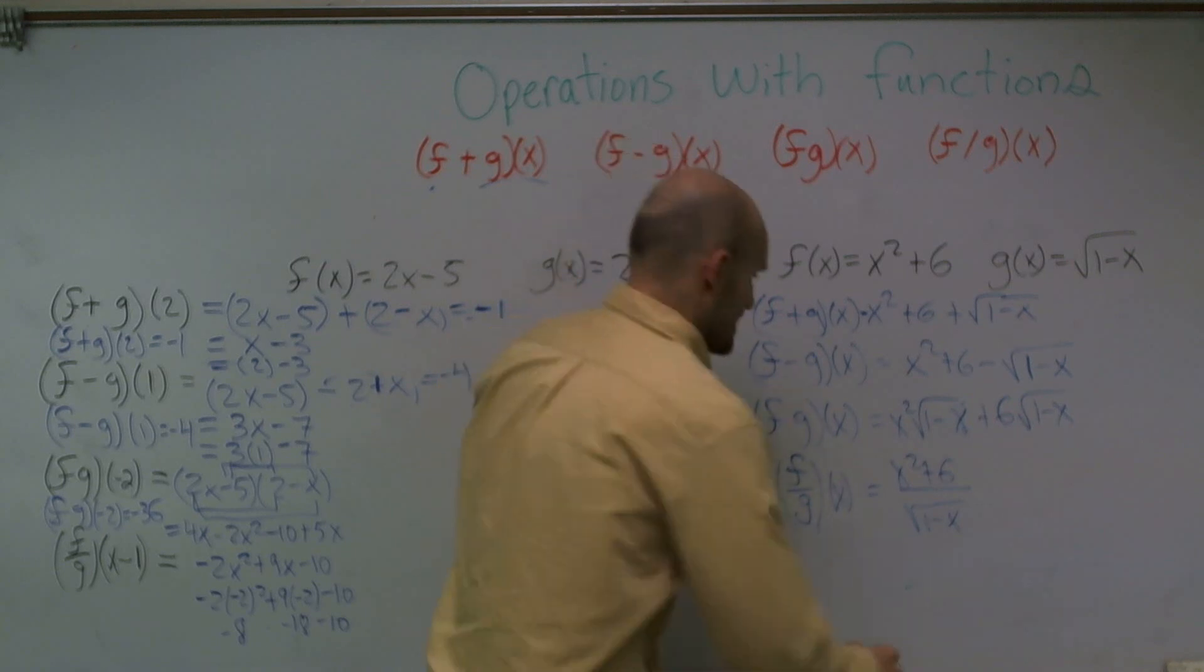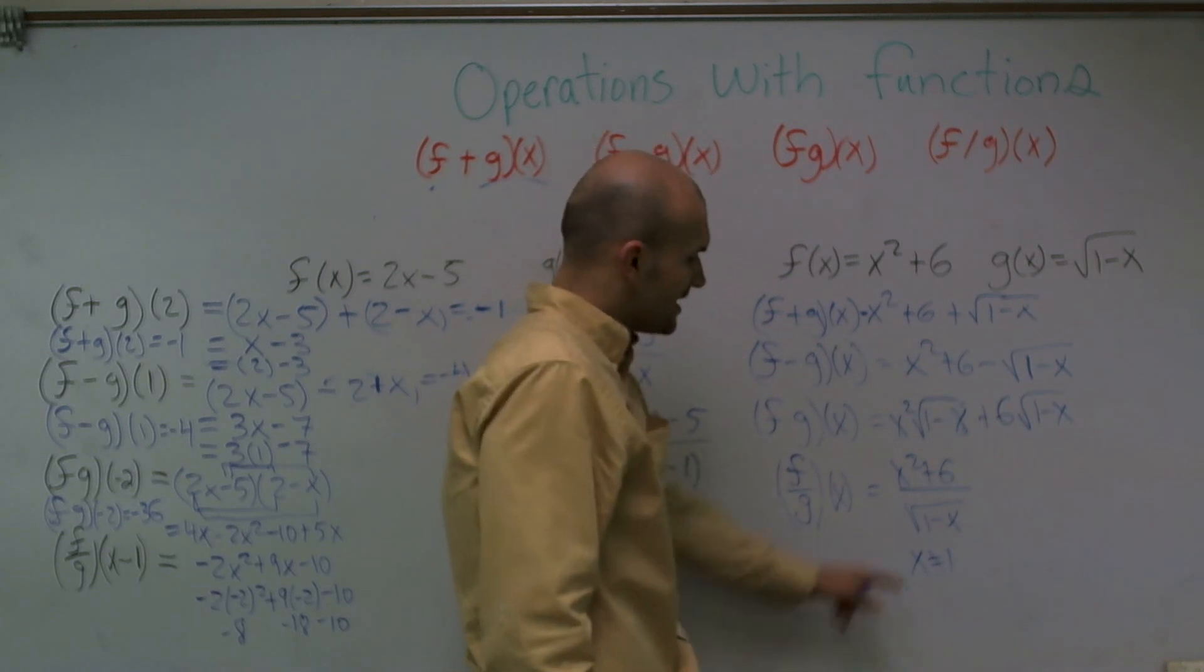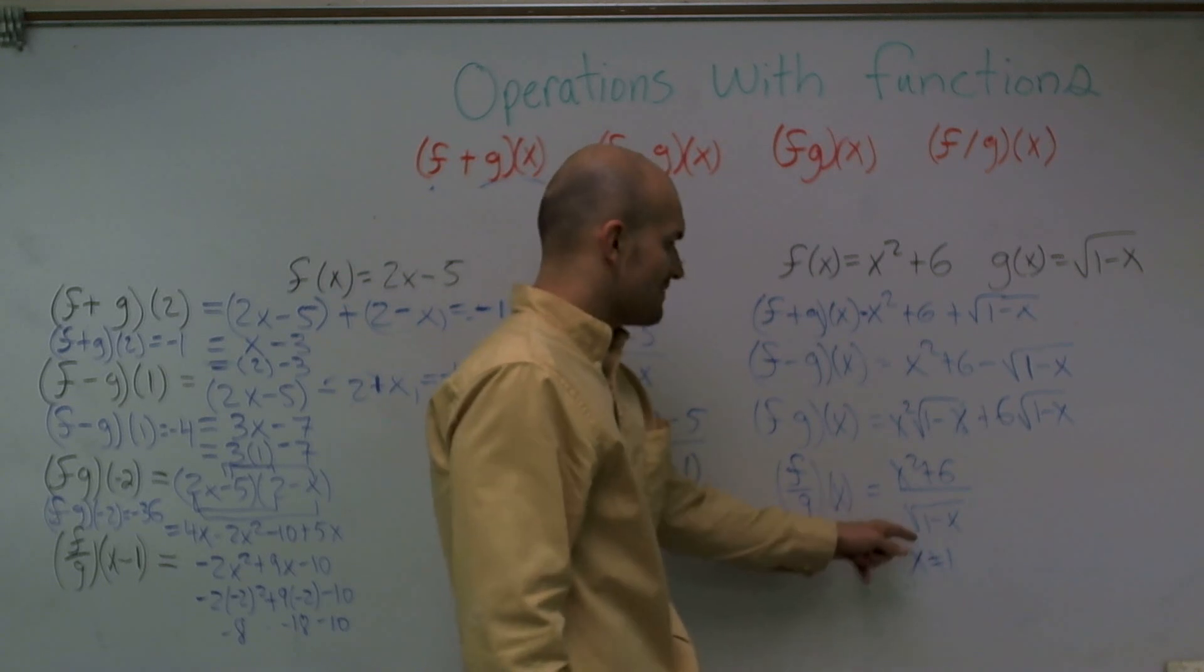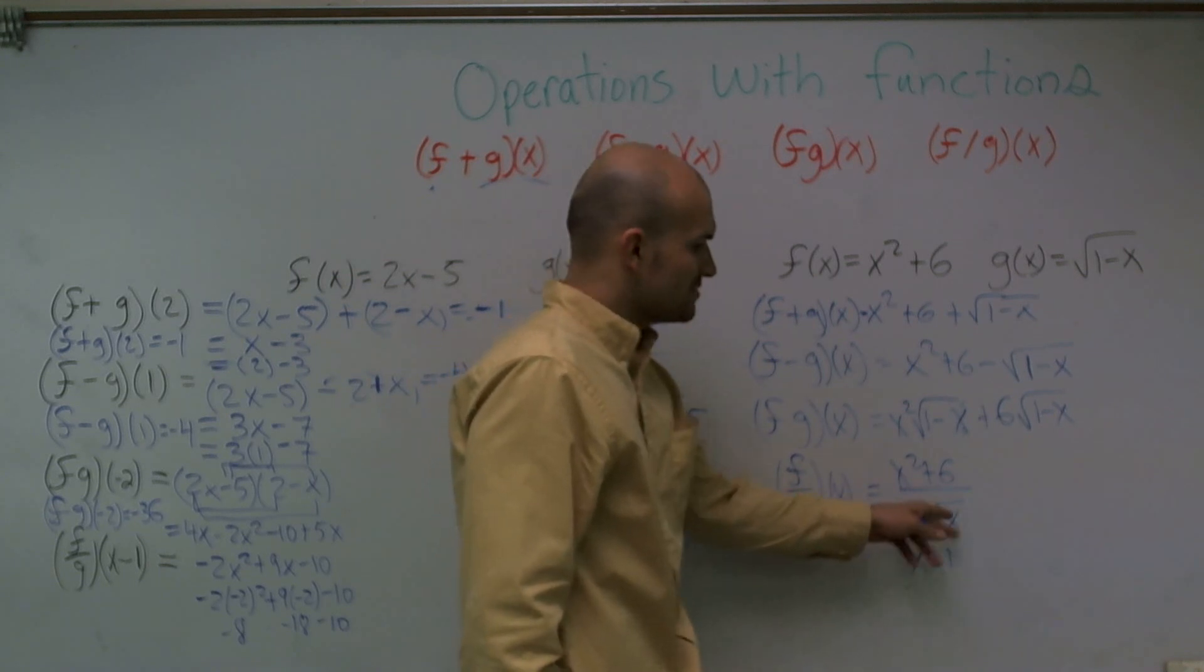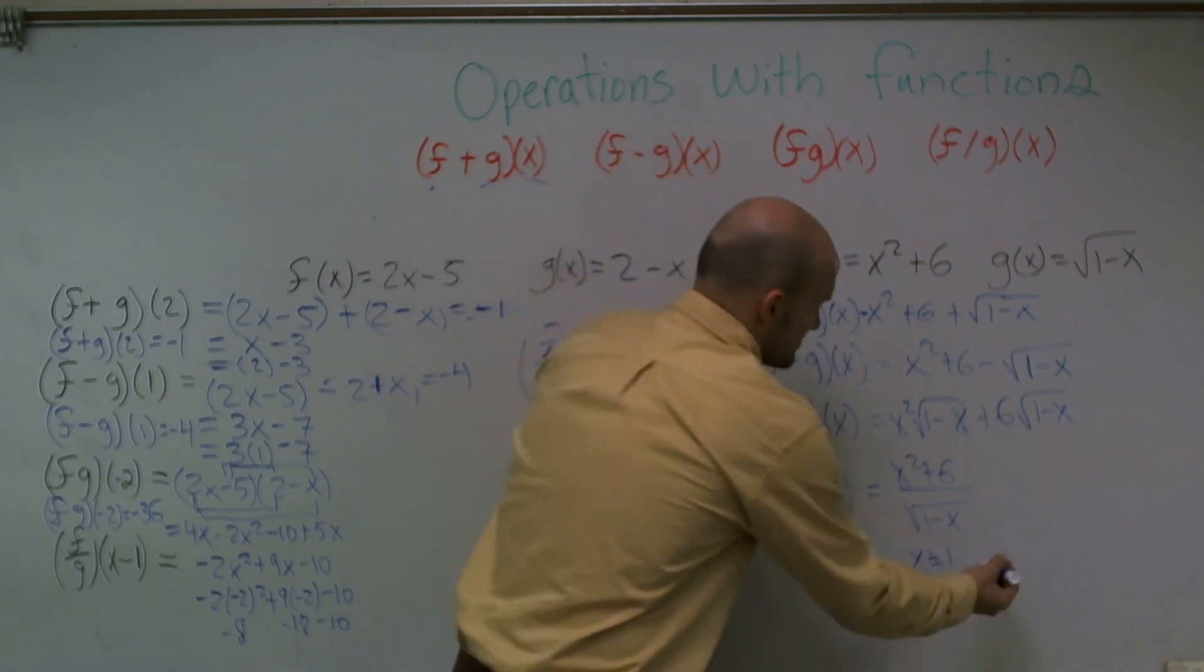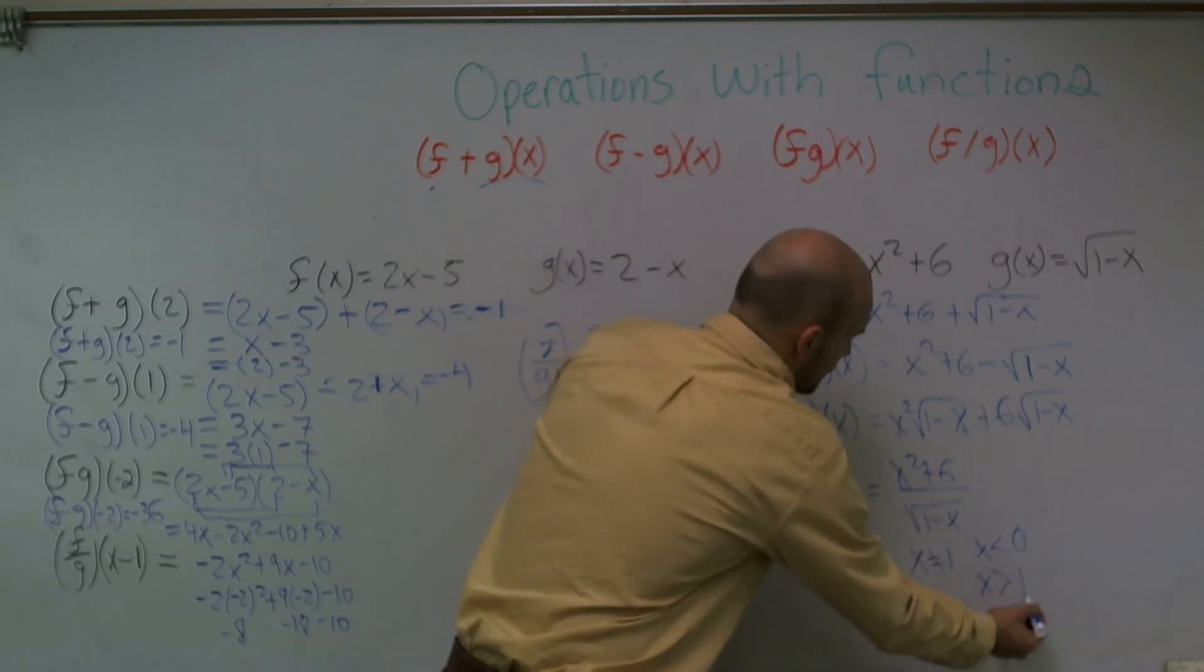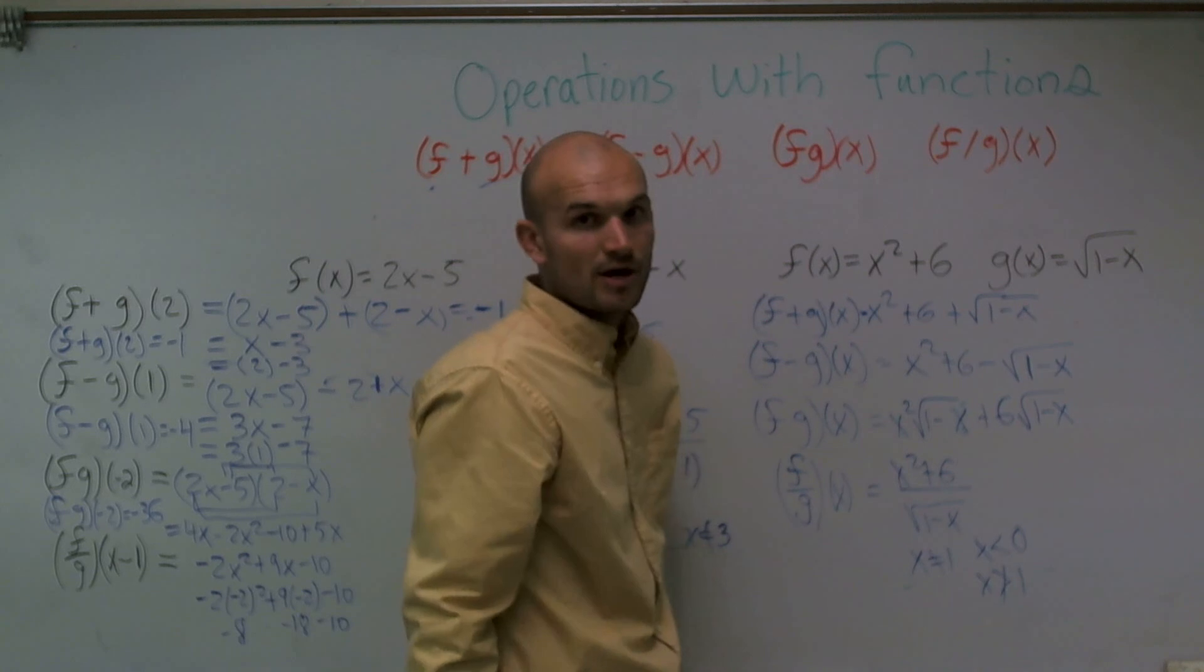And then I have my division equals x squared plus 6 divided by square root of 1 minus x. So I know that x cannot equal 1, right? Because if x equals 1, then the bottom of my rational function is 0, which you can't have. And then I need to determine what numbers does it have to be for it to be larger than 1 inside my radical. And what I notice is x has to be all numbers that are less than 1. Or we can say any number that is greater than 1 is not going to be a part of your domain.